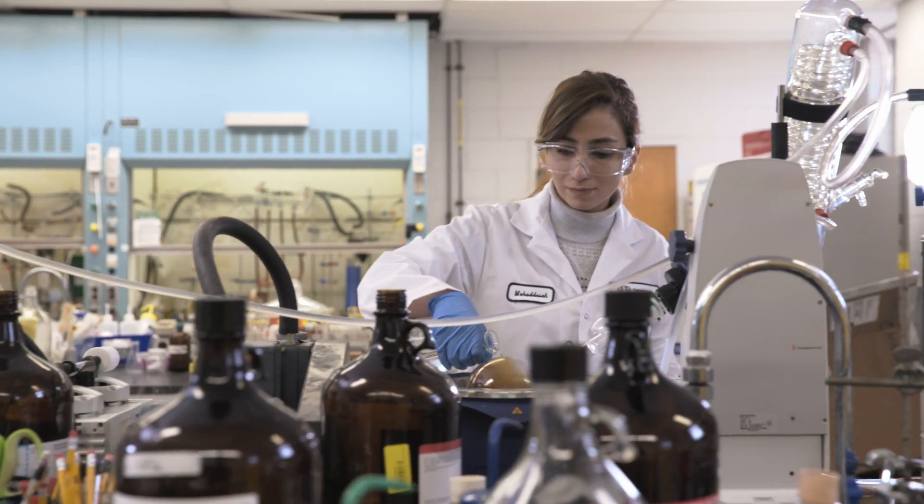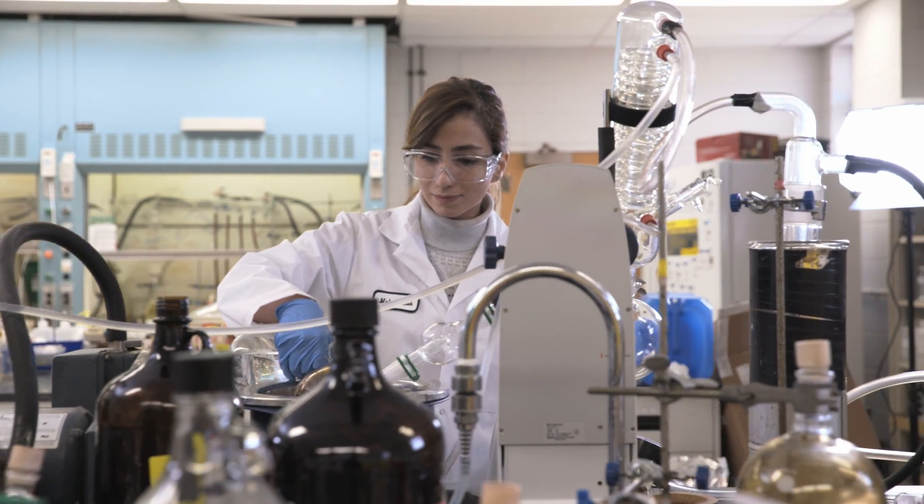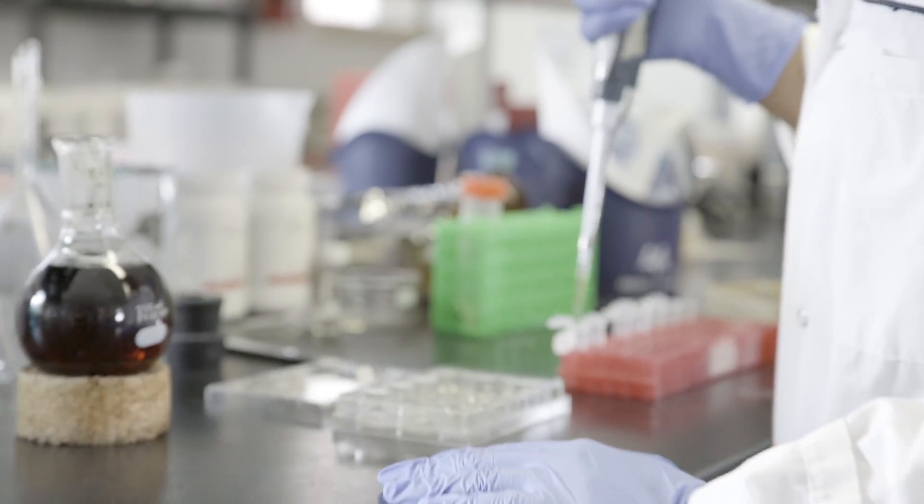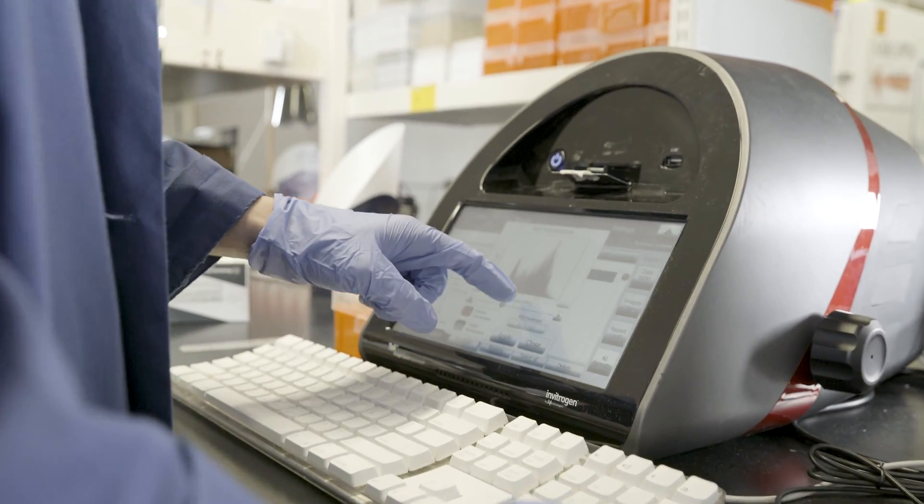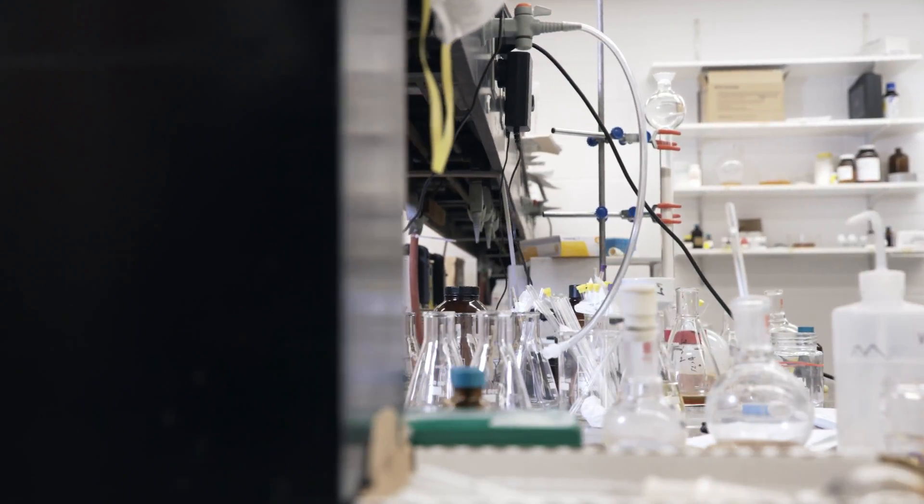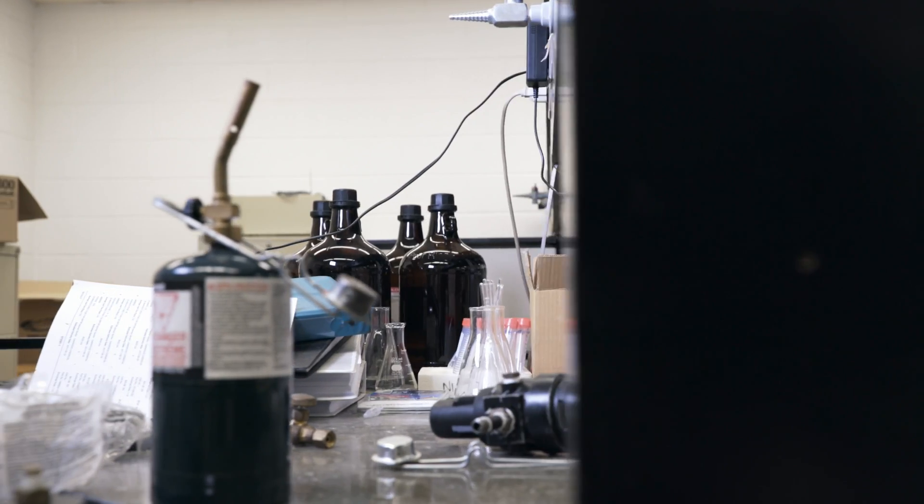We have four major areas of work. One thing we do is we make new molecules using synthetic chemistry. That's what this lab here is for that we're in right now. We're making new compounds for anti-cancer applications and autoimmune applications. We have a biology lab where we test these molecules out, and then we have a materials analysis lab where we look at the behavior of these materials and measure the actual properties of materials that we make.